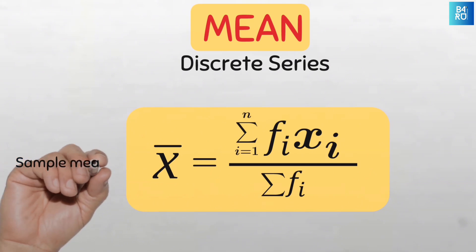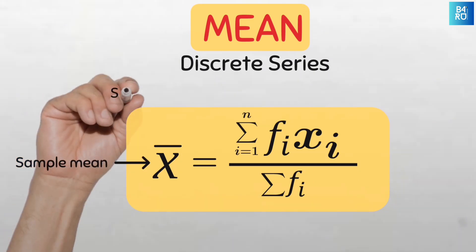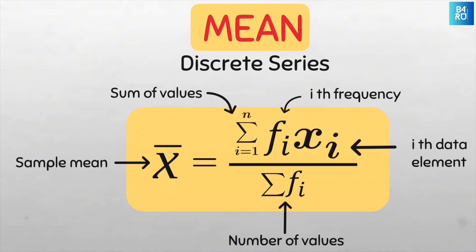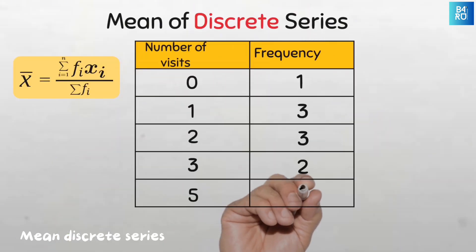Here, x bar is the symbol for the mean of the sample. Sigma i equals to 1 to n is the sum of all the values from the first to the last. F sub i is the value of the ith frequency, i.e. the frequencies of the index data values. X sub i is all the index data elements. And sigma f sub i is the sum of all the frequencies, which is the same as the sample size. So let us use this formula to find the mean of this data.